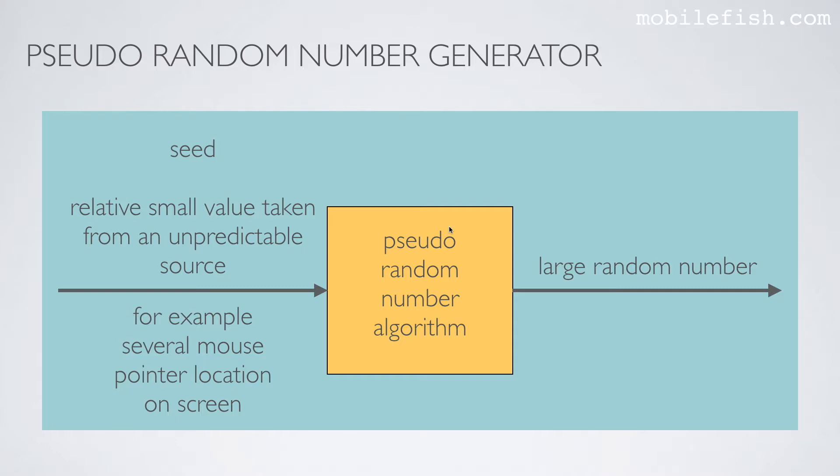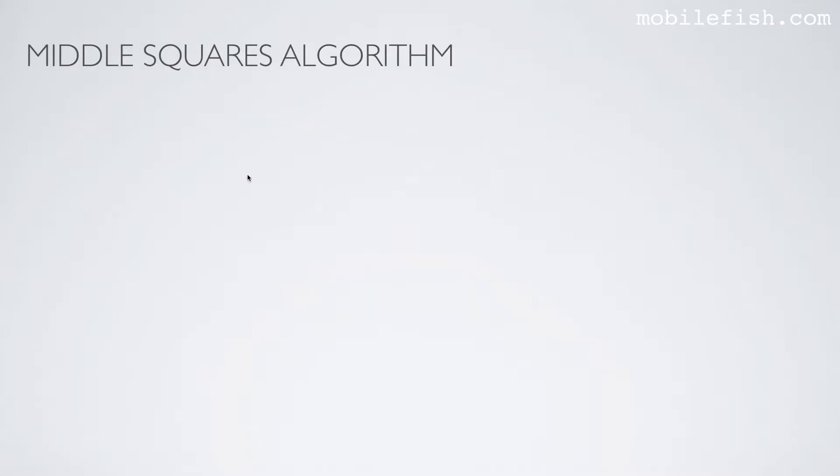An interesting question is how does a pseudo-random number algorithm generate a large random number using a small seed value. You can use for example a middle squares algorithm.